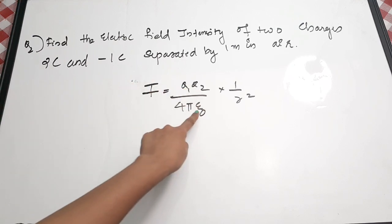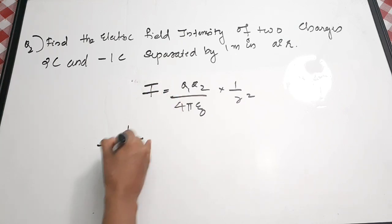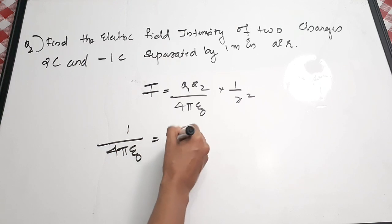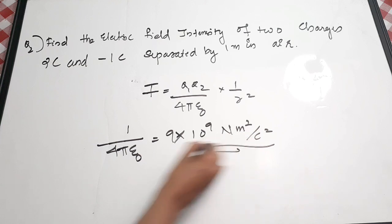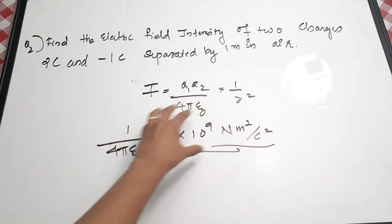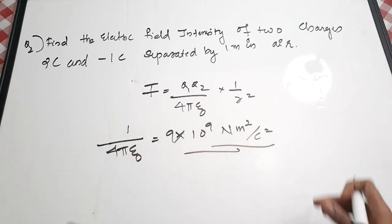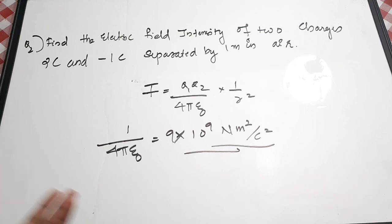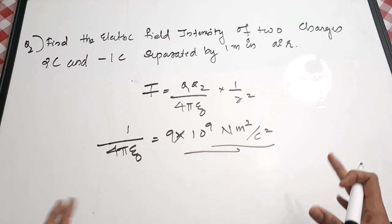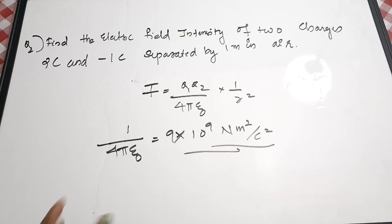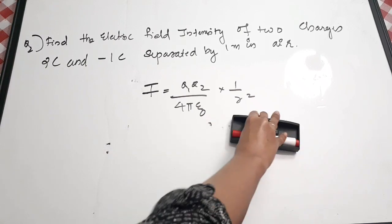Here q₁ = 2 C and q₂ = -1 C. The value of 1/(4πε₀) = 9×10⁹ N·m²/C², which you should note in your formula book. r = 1 meter. Substituting: F = (2 × -1) × 9×10⁹ / 1² = -18×10⁹ N. The unit is newtons.